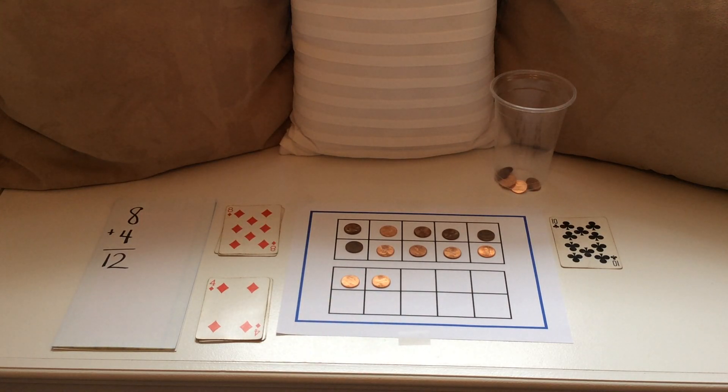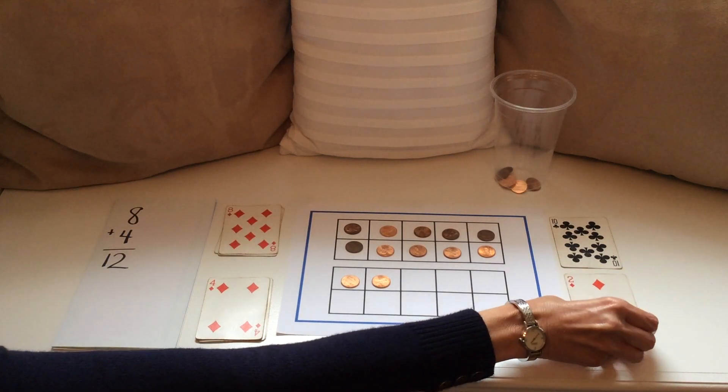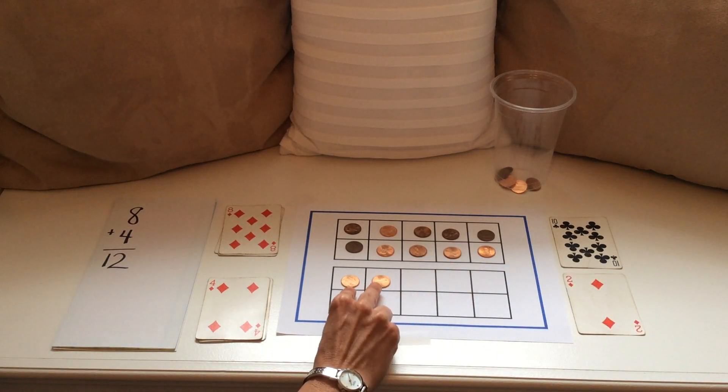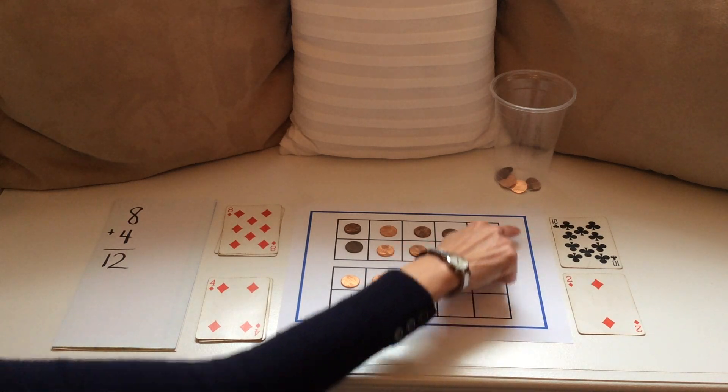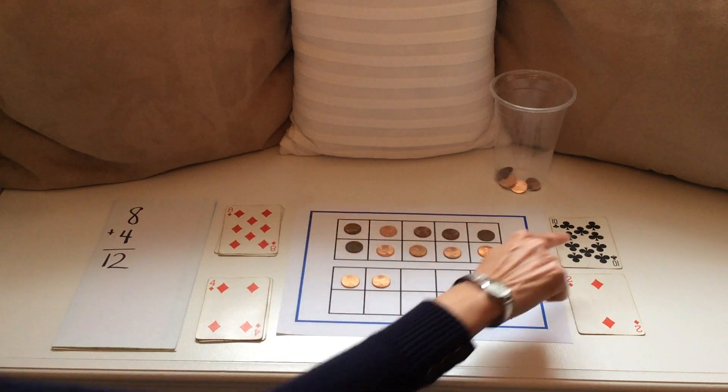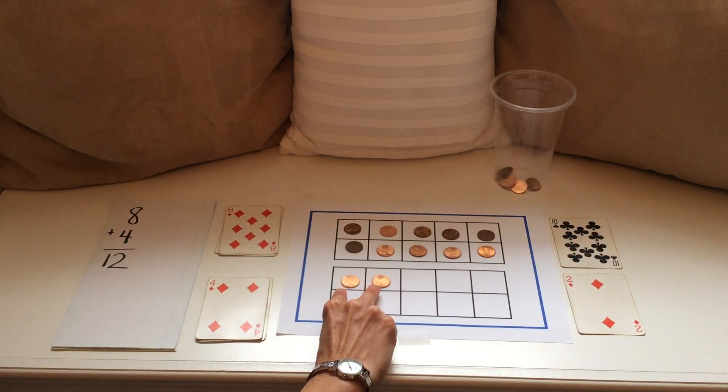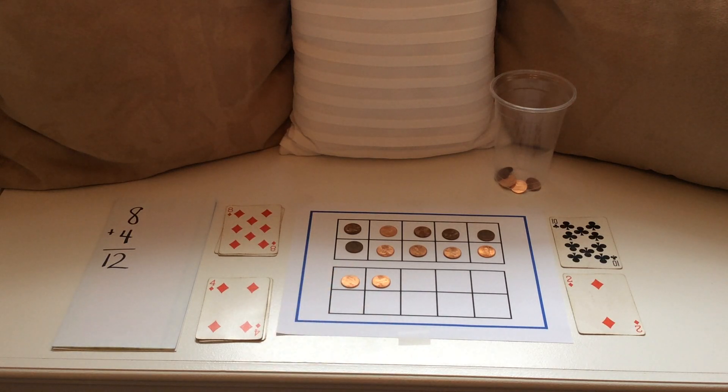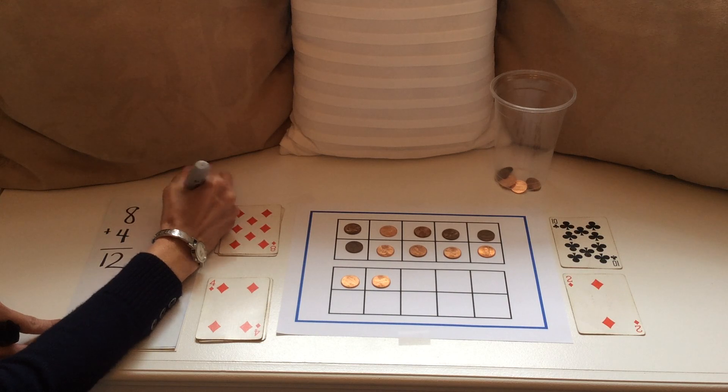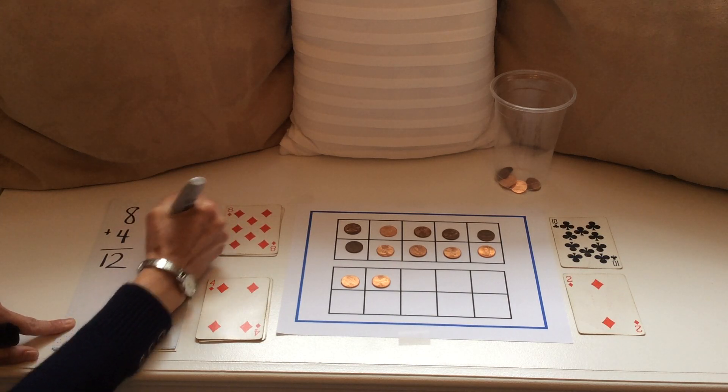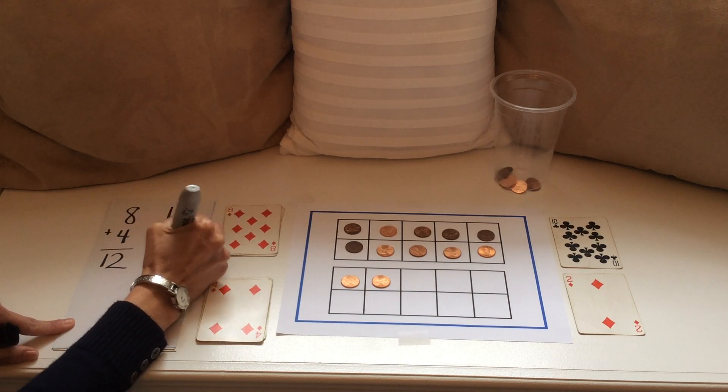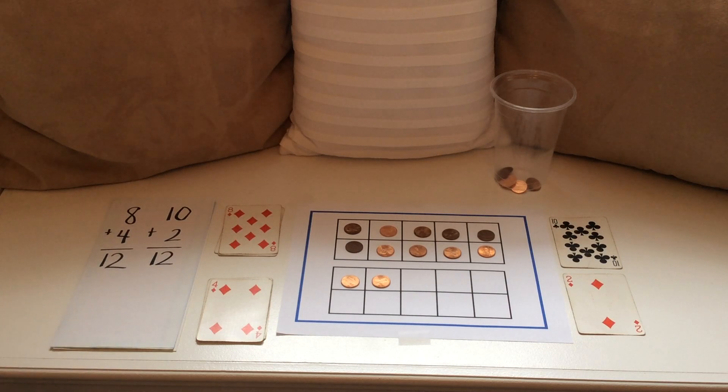I can represent this as a vertical addition sentence that says 10 plus 2 and I know that when I add with 10 I get rid of the 0 and add the two loose ones to make 12. So 10 plus 2 equals 12 is the same as 8 plus 4.